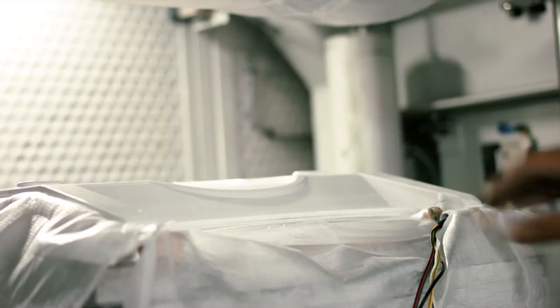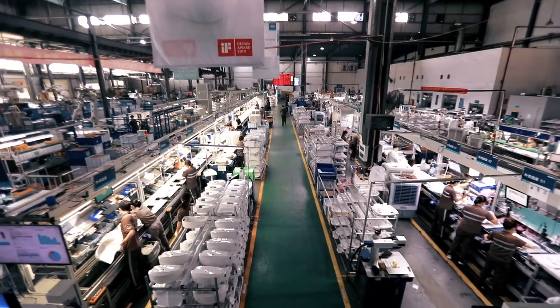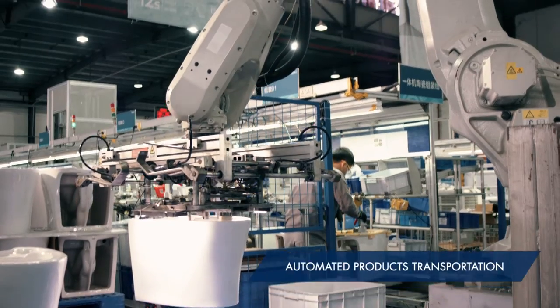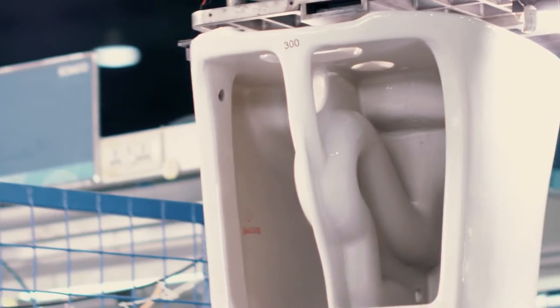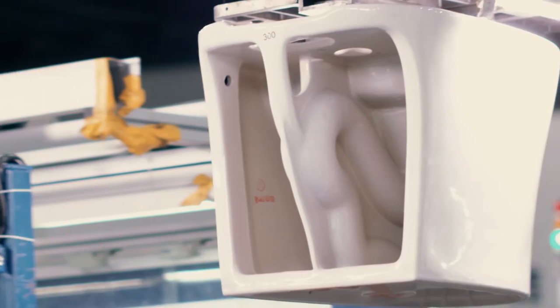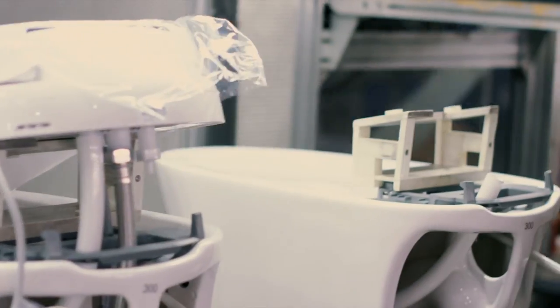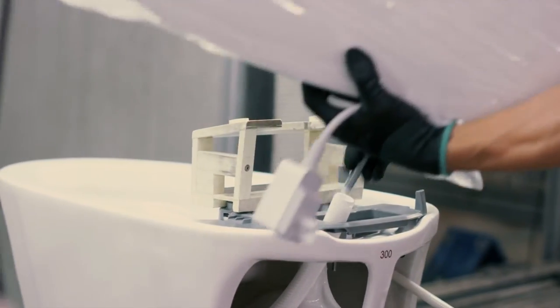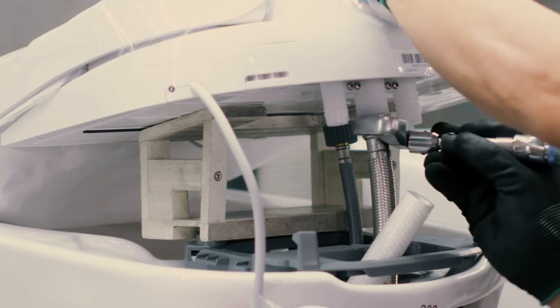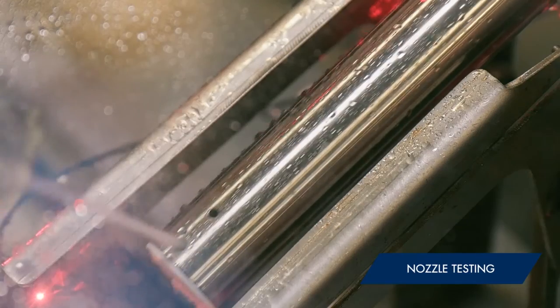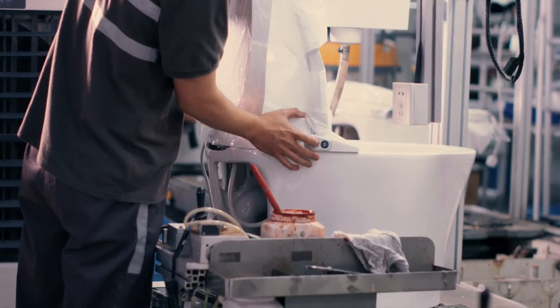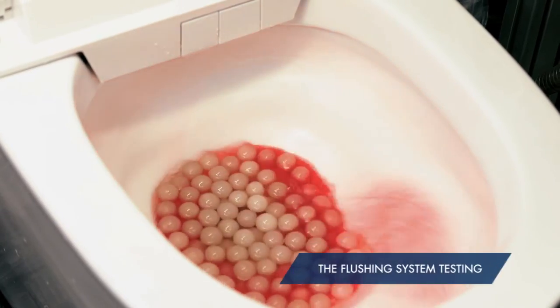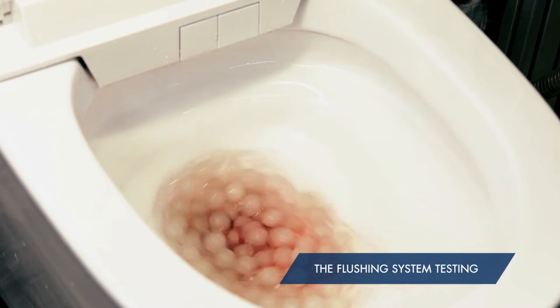Then, ready seats are transported to the testing line. At a different factory, robotic arms assist with moving toilets around for people to attach the seats to the ceramic bodies. Every single piece made is tested manually. Here water is being run through the nozzles to test its functioning.